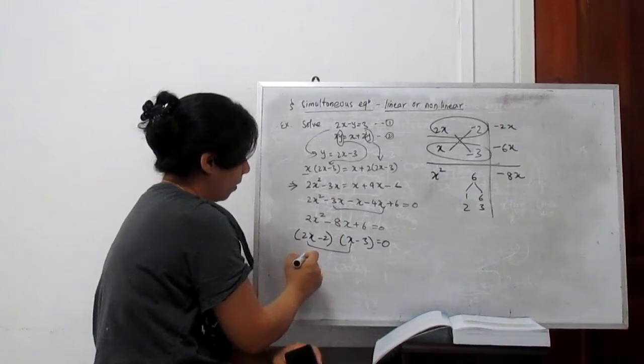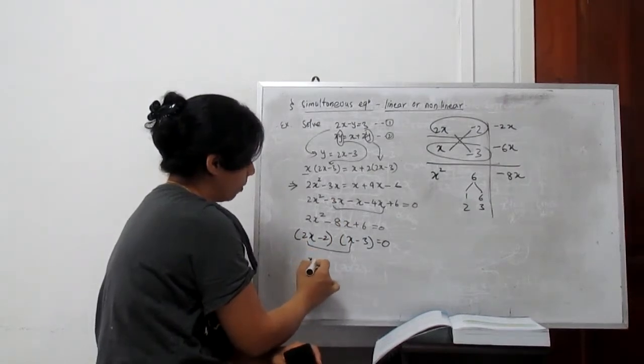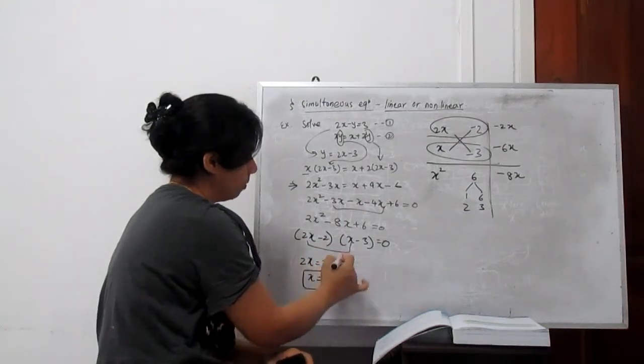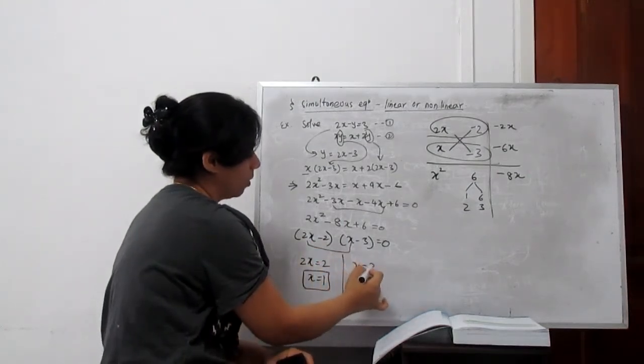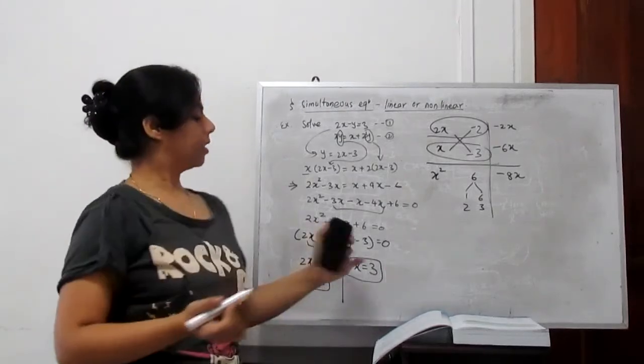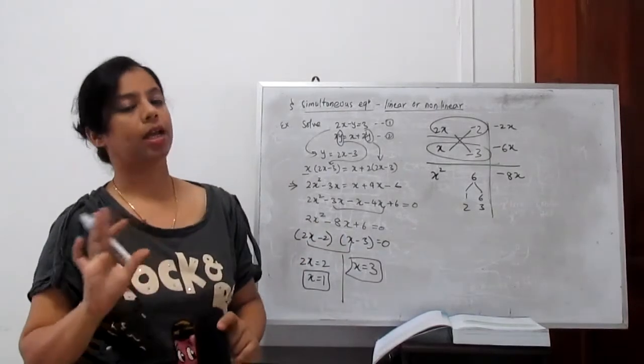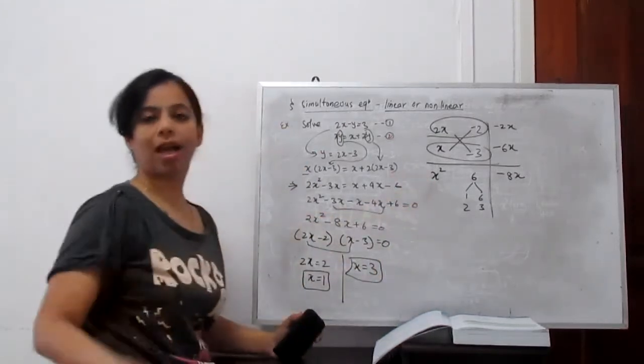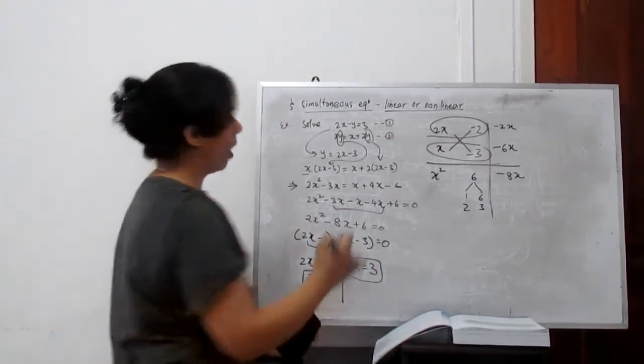Now find the value of x. x equals, 2x equals 2, so x equals 1. First root is 1. From here, x equals 3. So we have two values for x: x equals 1 or x equals 3. These two values, when you substitute in equation 1, we will get another two pairs of values for y.